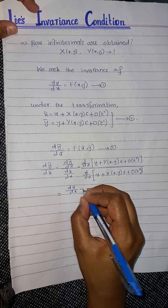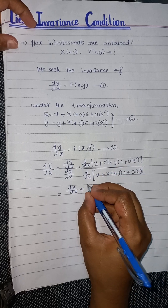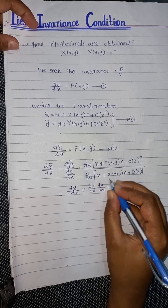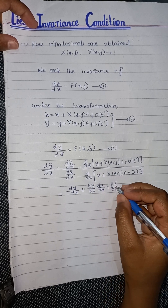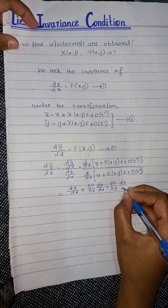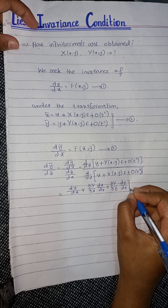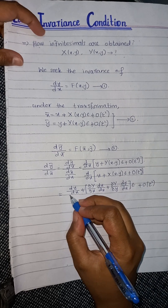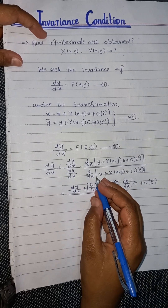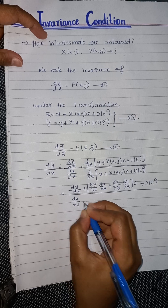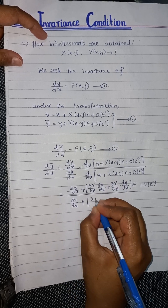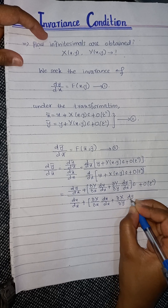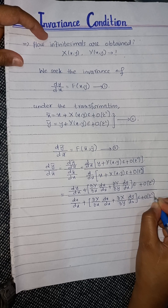Applying the chain rule: the derivative of Y(x,y) with respect to x is ∂Y/∂x · (dx/dx) + ∂Y/∂y · (dy/dx), and ε stays as is, with O(ε²) terms neglected. Similarly in the denominator, d/dx of x̄ gives: 1 + [∂X/∂x · (dx/dx) + ∂X/∂y · (dy/dx)]·ε + O(ε²).